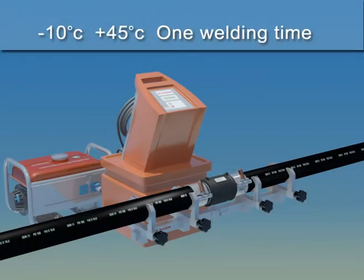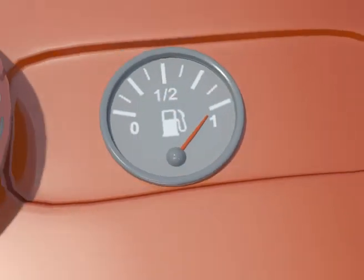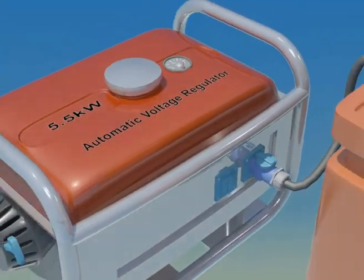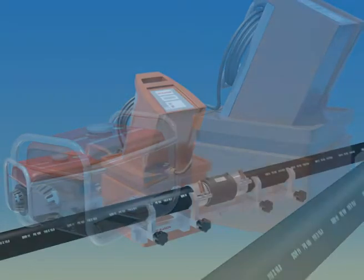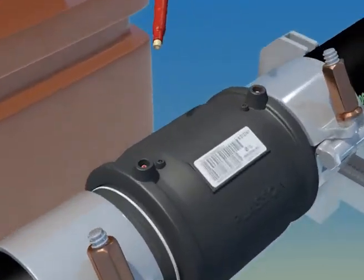Now that we have completed the preliminary steps, we turn our attention to the controller and generator. First, make sure the gas tank is full, then start up the generator. Once the voltage is stable, connect the control box to the generator, then connect the terminals to the fitting.